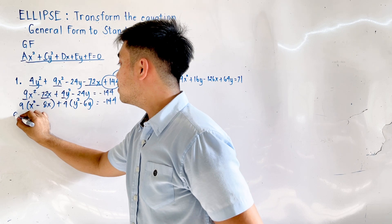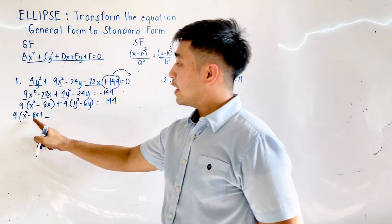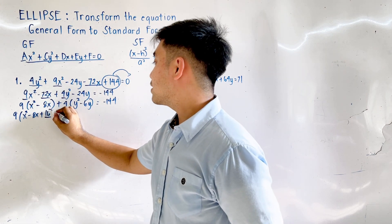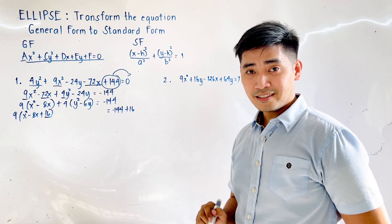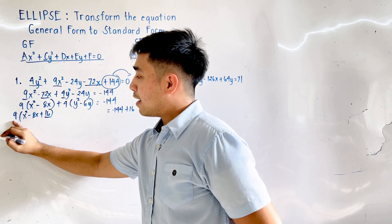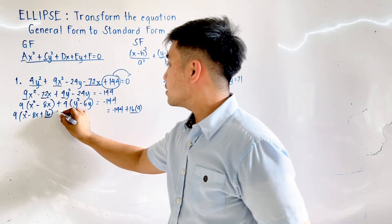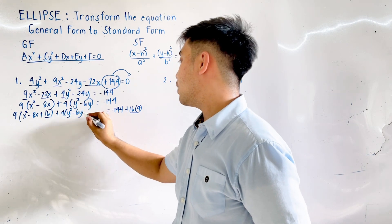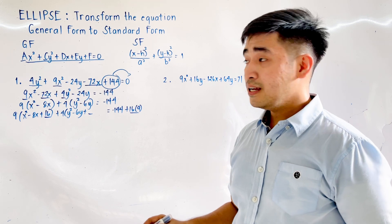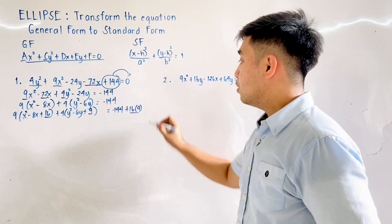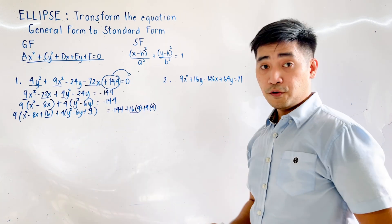This becomes 9(x² − 8x + 16). What do we add? Negative 8 divided by 2 is negative 4; negative 4 squared is positive 16. But since there is a factor of 9, we add 9 × 16 to the right side. Then plus 4(y² − 6y + 9): negative 6 divided by 2 is negative 3; negative 3 squared is 9. We add 9 times the factor 4 to the right side.